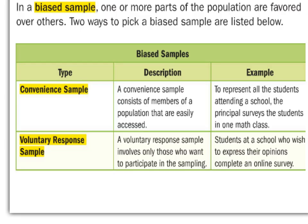Now, biased samples — these are ways you choose people to take a survey where you want them to answer in a very specific way, or the setup causes a specific answer. For example, if you went to a Utah Jazz game and asked every tenth person walking in the door what their favorite NBA team is, you're going to get a lot of Jazz fans. That turns out to be a convenience sample, because they're already there, easily accessed, and very likely to say the Jazz.